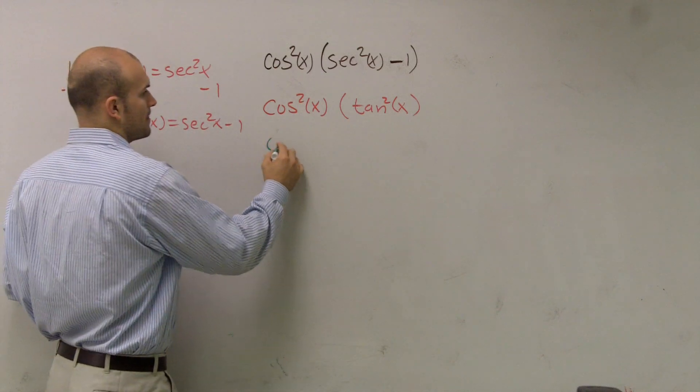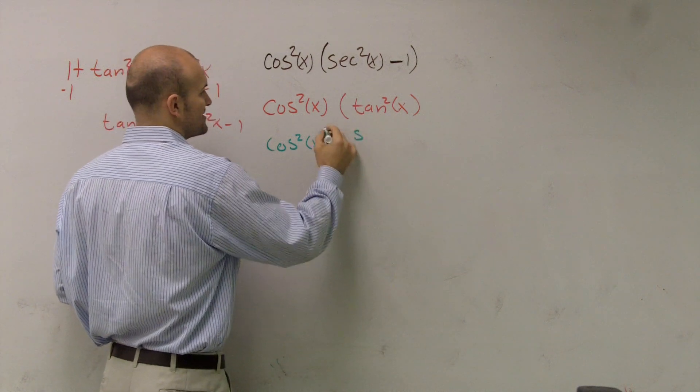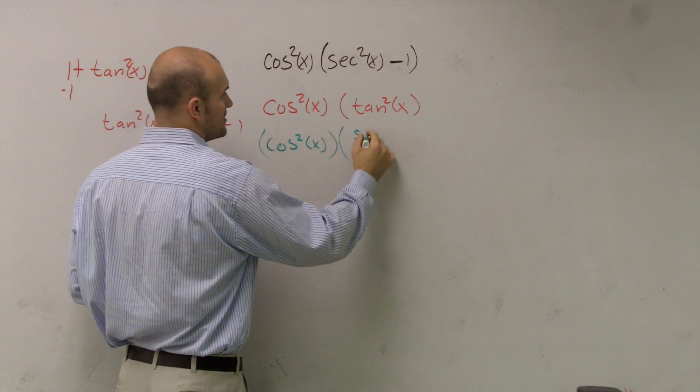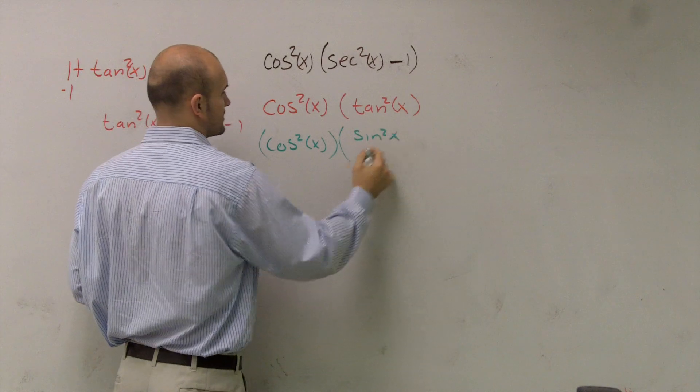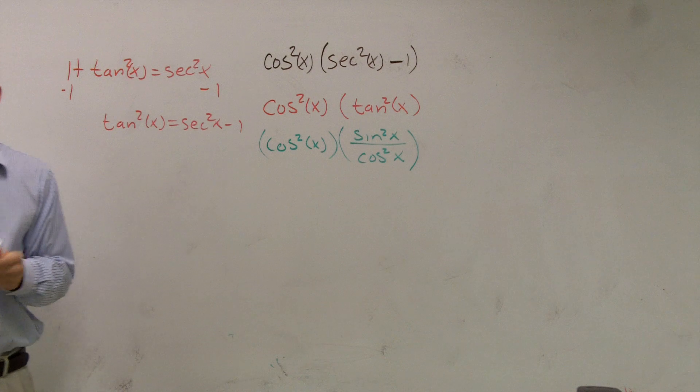So now I can have cosine squared of x multiplied by sine squared of x over cosine squared of x. So therefore,